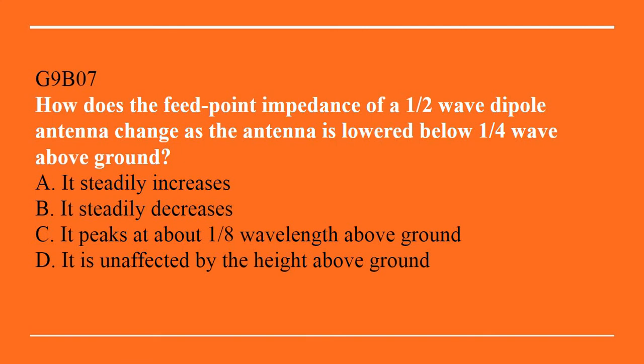G9B07: How does the feed point impedance of a half-wave dipole antenna change as the antenna is lowered below a quarter-wave above ground? A. It steadily increases. B. It steadily decreases. C. It peaks at about one-eighth wavelength above ground. Or D. It is unaffected by the height above ground. The answer is B, it steadily decreases.